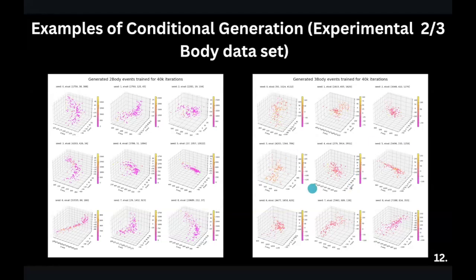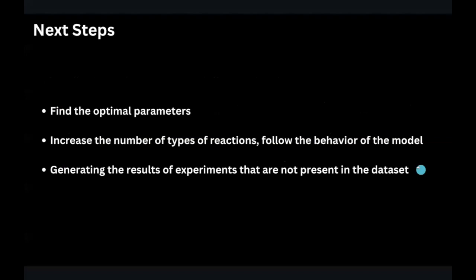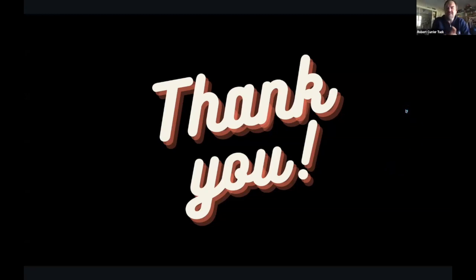In summary, the following tasks were successfully completed: adopting the 2021 experiment to our data by adding another dimension; conditional generation on a trivial dataset such as circles and lines; and conditional generation on experimental data for two- and three-body data. Our next steps will be: find the optimal parameters through fine-tuning, increase the number of types of reactions, and generate the results of experiments that are not presented in the dataset. That's all, thank you very much.